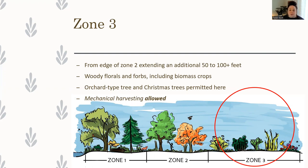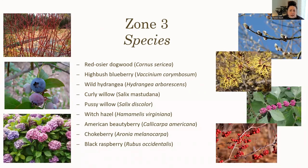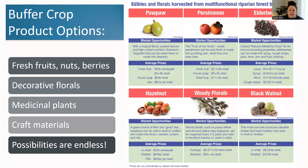In zone three and in some of zone two, you want to make sure you have species that can tolerate being a little bit drier and aren't those species that need wet feet, unless you have a particularly wet property. Examples of zone three species for a multifunctional buffer include red osier dogwood — those are those fancy red twigs that look very beautiful in the winter and can be used in flower arrangements. Highbush blueberries if you have the right kind of soil, wild hydrangea, curly or pussy willow, witch hazel, American beautyberry — those purple berries on a really cool shrub — chokeberry, and black raspberry. Some crop options are outlined here as well, just things to consider if people wanted to really financially benefit from their buffer.